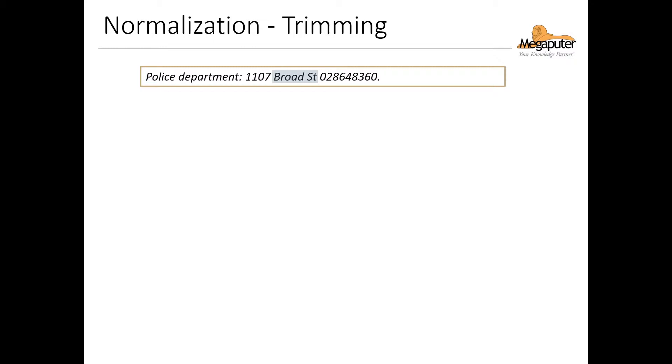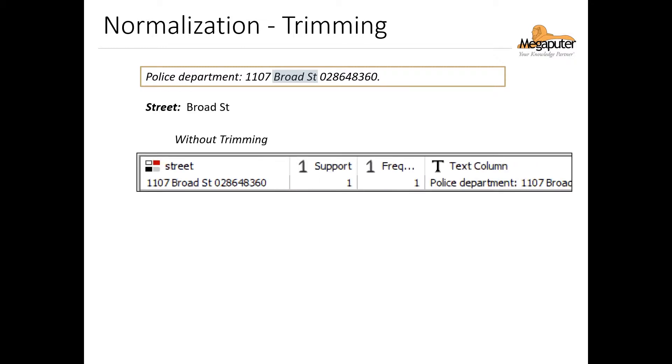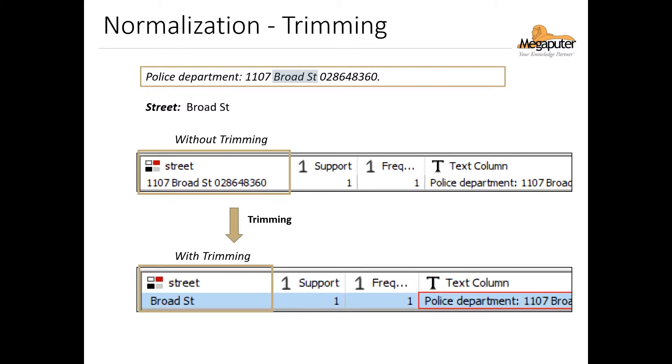Trimming essentially takes off parts of the extracted information that you don't need in your attribute. In this example, we want to capture the street, which is part of the address where a police department is located. Depending on how we extract an address, it usually includes some numbers. But if we're not interested in the numbers, we can use trimming and remove them from our output.